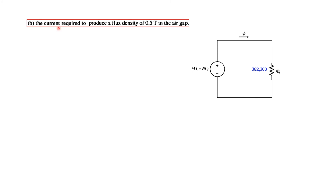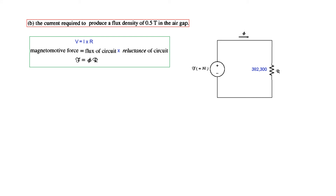Coming to the second part: finding the current required to produce a flux density of 0.5 tesla in the air gap. Using our equivalent circuit, we need to find the MMF to calculate the flux and then the current. Keep in mind the relation: MMF = Φ × R, which is exactly similar to the electrical circuit where V = I × R. So MMF equals the flux of the circuit multiplied by the reluctance of the circuit.